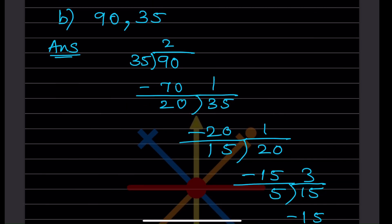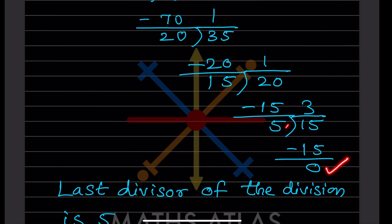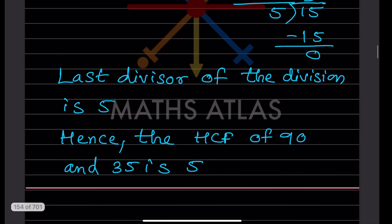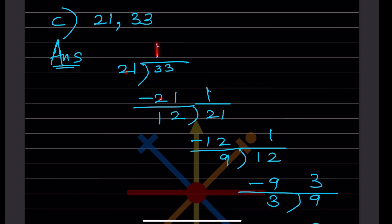For the next example: 35 × 3 = 105 isn't possible, so we stop at 70. The remainder is 20. Divide 40 by 21 — that's not possible, so 21 × 1 = 20, remainder is 15. Divide 20 by 15: remainder is 5. Divide 15 by 5: 5 × 3 = 15, remainder is 0. The last divisor is 5, so the HCF is 5.